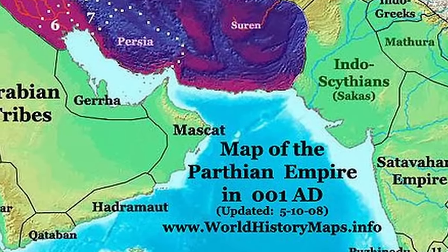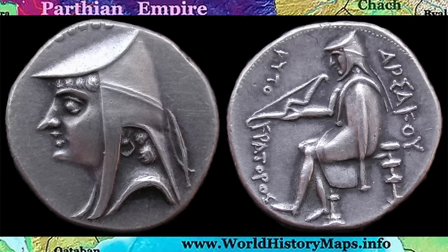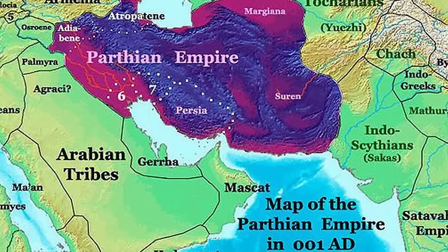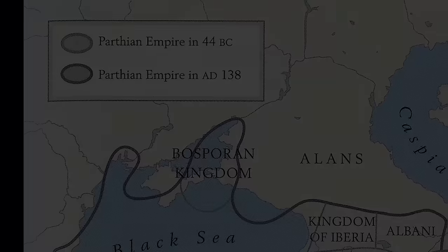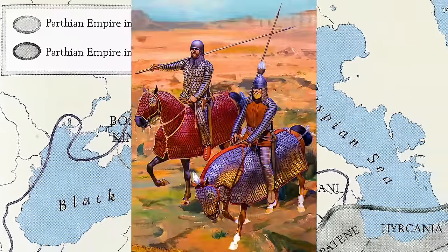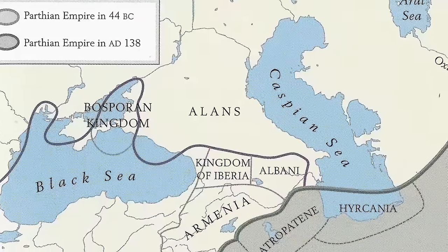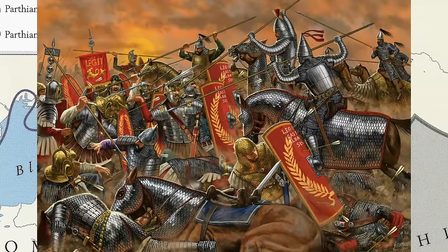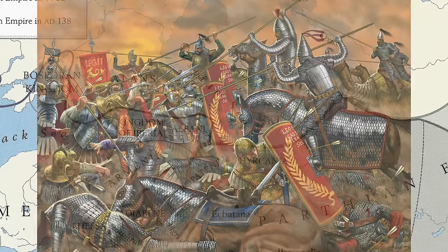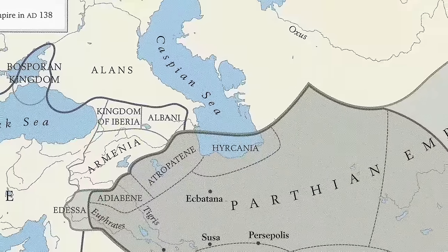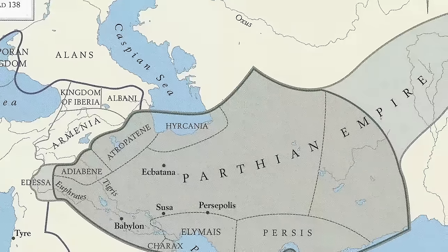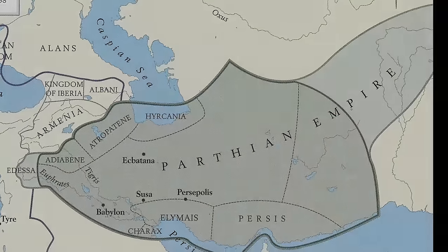The Parthian Empire was founded by Arsaces I in 247 BC, a local ruler of Parthia who rebelled against the Seleucid Empire. The empire was situated in ancient Persia, including modern-day Iran, Iraq, Armenia, and more. The Parthians were known for their skilled cavalry — particularly the Cataphracts, heavily armored cavalry — and their expertise in mounted archery. They engaged in frequent conflicts with the Roman Republic and later the Roman Empire, establishing a series of intermittent wars known as the Roman-Parthian Wars. Over time, with wars against Rome, the Sassanians, and nomadic invasions, the empire fell. The Sassanian king Ardashir I defeated the last Parthian king, Artabanus IV, and the empire fell in 224 AD.